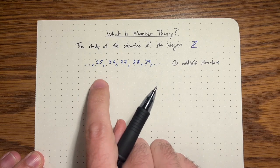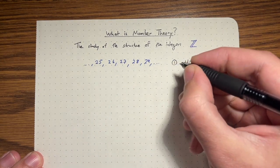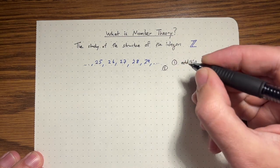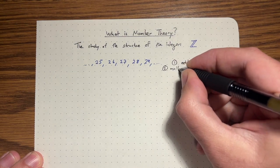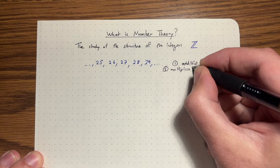But we're missing out on a lot of the structure here. There's a lot more structure here. And the second part of structure would be what I'll call the multiplicative structure.